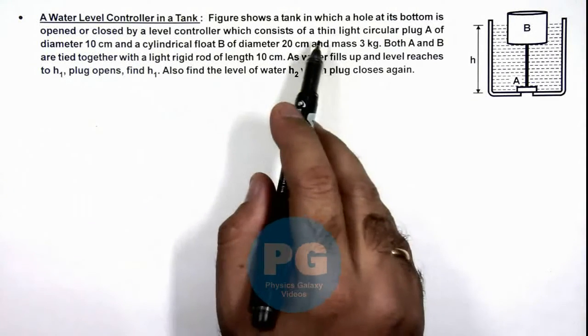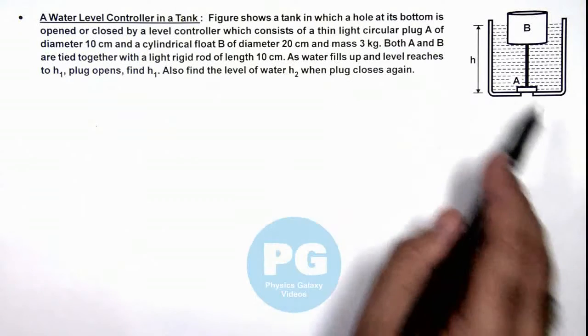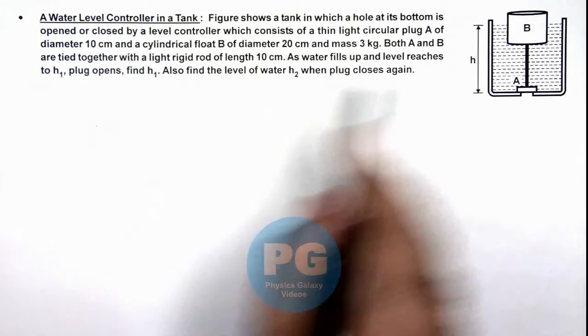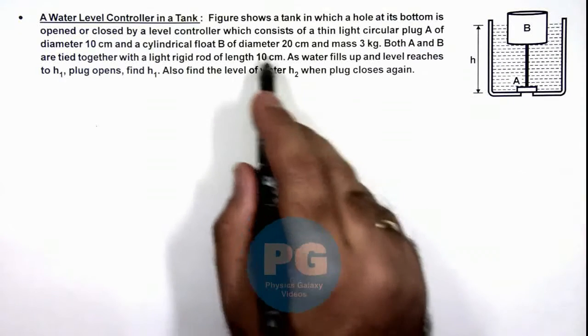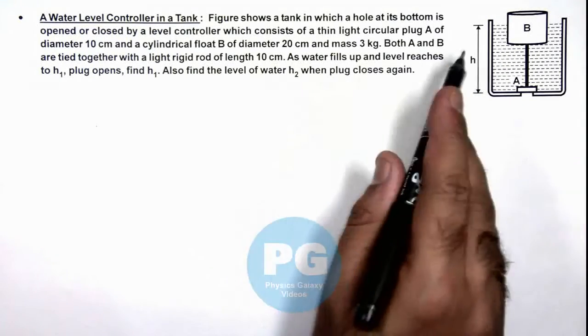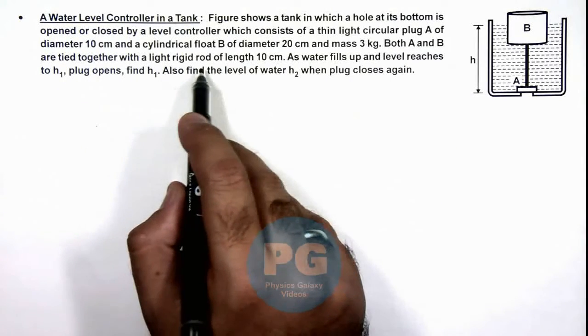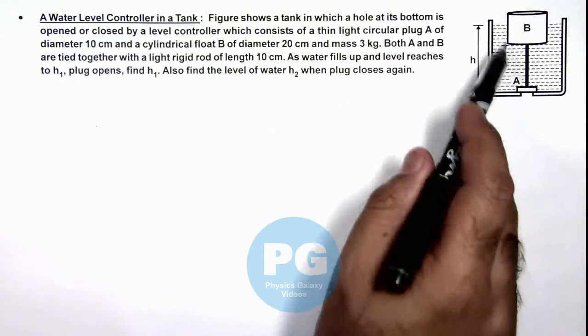Which consists of a thin light circular plug A of diameter 10 cm and cylindrical float B of diameter 20 cm and mass 3 kg. Both A and B are tied together with a light rigid rod of length 10 cm.